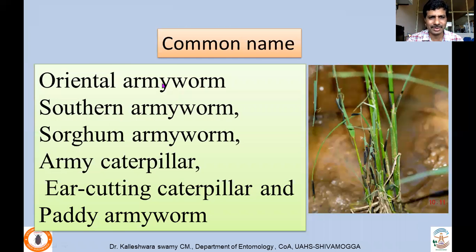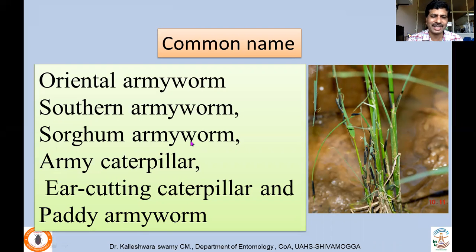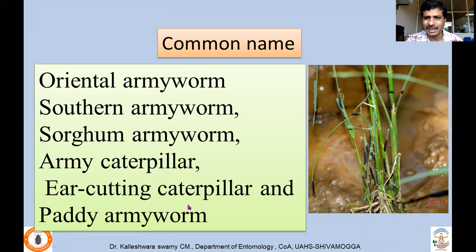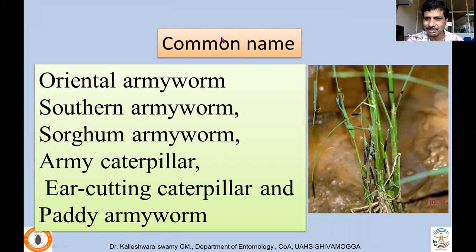This insect is commonly called oriental armyworm, but it has many other names: southern armyworm, sorghum armyworm — whenever it attacks large areas of sorghum; army caterpillar — because large numbers of larvae are found together; earhead cutting caterpillar — as it attacks panicles and earheads; and paddy armyworm, as it also attacks paddy.